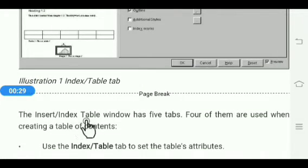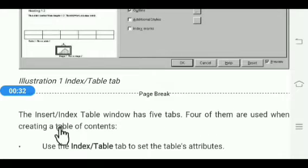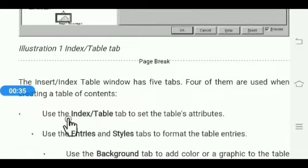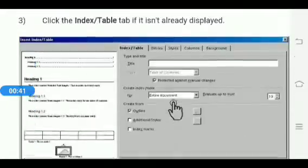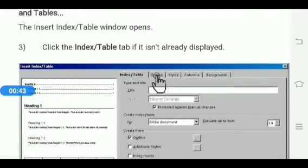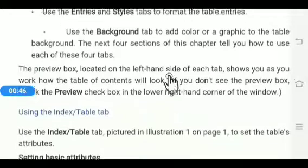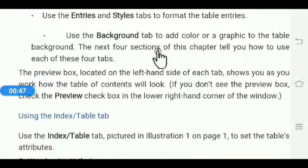The Insert Index/Table window has five tabs; four of them are used when creating a table of contents. Use the Index and Table tab to set the table attributes. Use the Entry and Style tabs to format the table entry. See the Entries and Style tabs here.